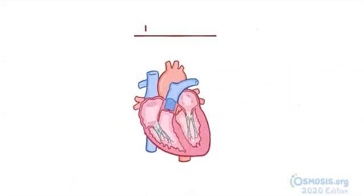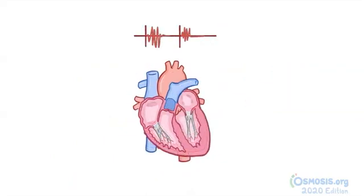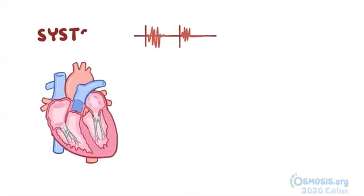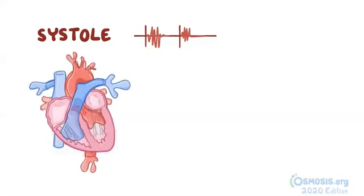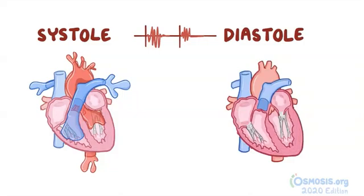Each heartbeat consists of two phases: systole, which is when the heart contracts and pumps blood out of the ventricles, and diastole, which is when the heart relaxes and the ventricles fill with blood.